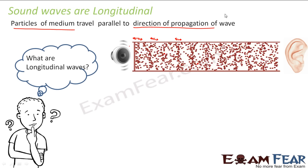What is the direction of propagation of the wave? A wave is nothing but the disturbance. In which direction is the disturbance traveling? Now just see the overall picture — the overall disturbance is actually moving along this direction, because the disturbance is being transmitted from one particle to the next. So the wave is propagating along this direction and the particles are also oscillating along this direction — parallel to the direction of propagation. Such waves are known as longitudinal waves.